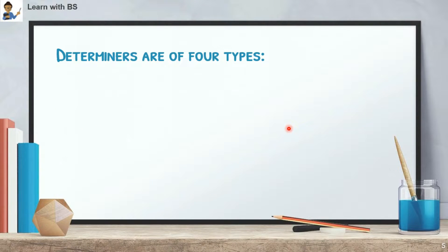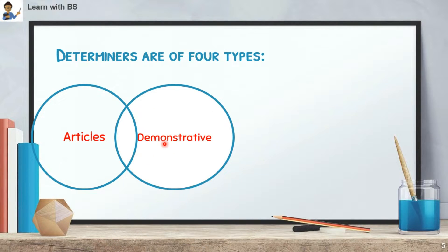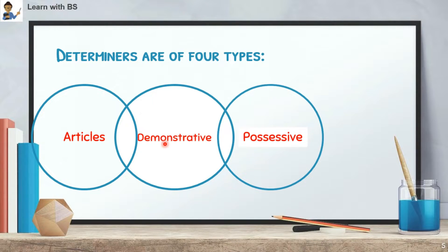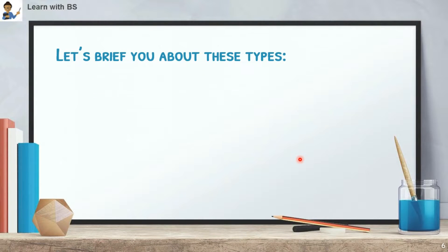Determiners are of 4 types. First is Articles. Articles you have read — singular and plural. Then we have Demonstrative. Then we have Possessive. And the fourth is Quantitative. So these 4 types of words — Articles, Demonstrative, Possessive, and Quantitative — are the four types of determiners. Let me brief you about each type.